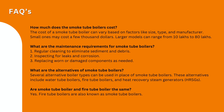Smoke tube boilers need regular cleaning, and inspection needs to be done for leaks and corrosion. Alternative boiler types to smoke tube boilers include water tube boilers, fire tube boilers, and heat recovery steam generators.